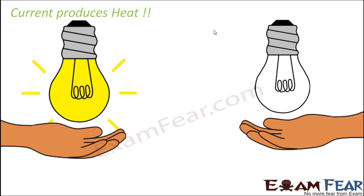It sounds strange, but let us try to do this experiment. Try to take your hand near a glowing bulb — do not touch it, and do not take it too near either, because your safety comes first. Take your hand a little near the bulb in one case when the bulb is on, and in another case when the bulb is switched off. Do you observe any difference in the two cases?